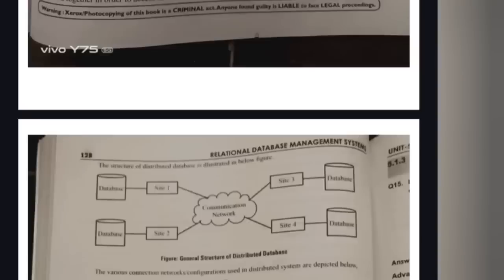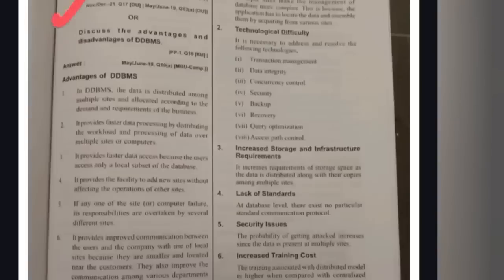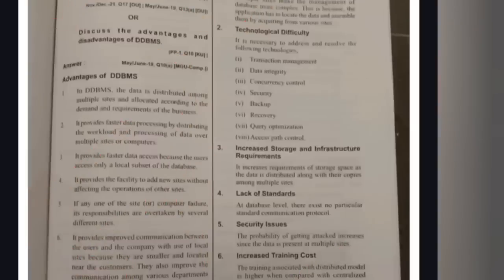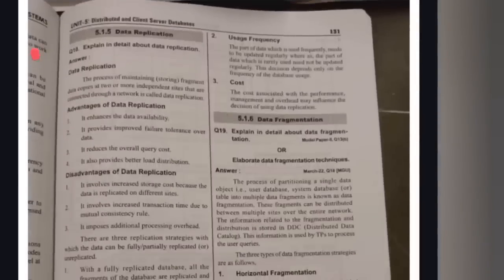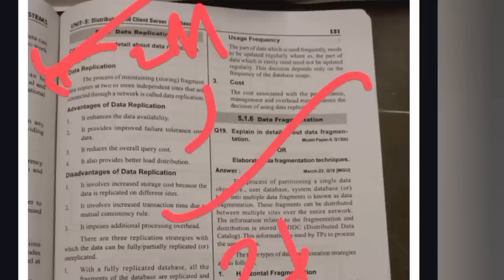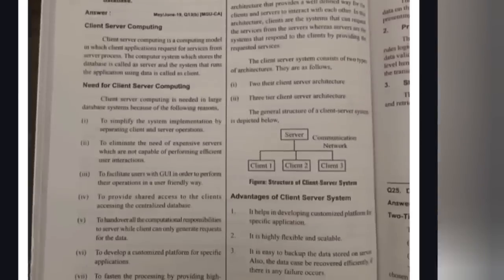In unit five, the topic is the structure of Distributed Database Management System (DDBMS). It is not very important, but look at the advantages and disadvantages of DDBMS. Advantages include: it facilitates adding new sites without affecting operations. Disadvantages: data integrity, backup, security, and recovery techniques are not well supported in a distributed database. Advantages and disadvantages of RDBMS is also an important question. Data replication and data fragmentation are important for two-mark questions.